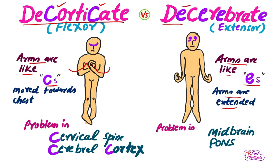The word 'decerebrate' contains the letter E multiple times, and the word 'extensor' also contains the letter E. So in decerebrate rigidity, the arms form the letter E, while in decorticate rigidity, the arms are folded or flexed towards the chest in the form of a C.